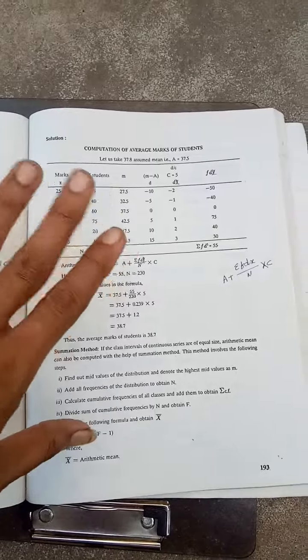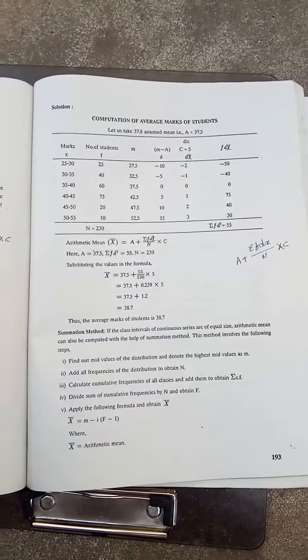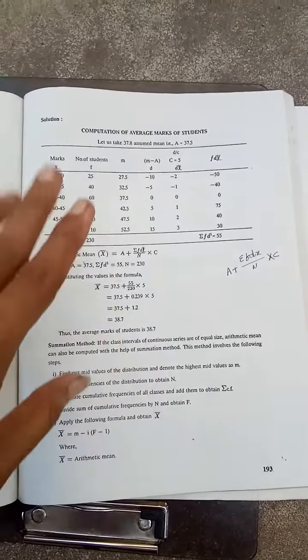Then dx, d dash or dx, no problem. d by c, means class interval is 5, minus 10 by 5 equals minus 2, minus 5 by 5 equals minus 1, likewise.